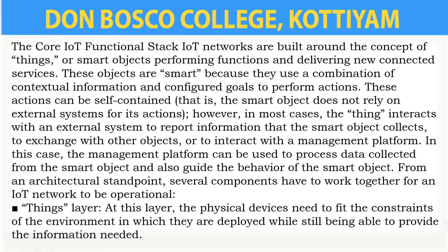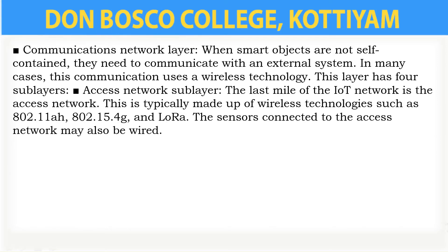The first layer in this core IoT functional stack is the things layer, which consists of the physical devices — the smart objects. The next layer is the communication layer. A smart object cannot do anything by itself; any data it generates must be communicated for us to gain any insight. We need a communication network. That communication network is again subdivided into different sub-layers. The first is the access network sub-layer, which is made up of wireless technologies. Sensors connected to the access network may also be wired.